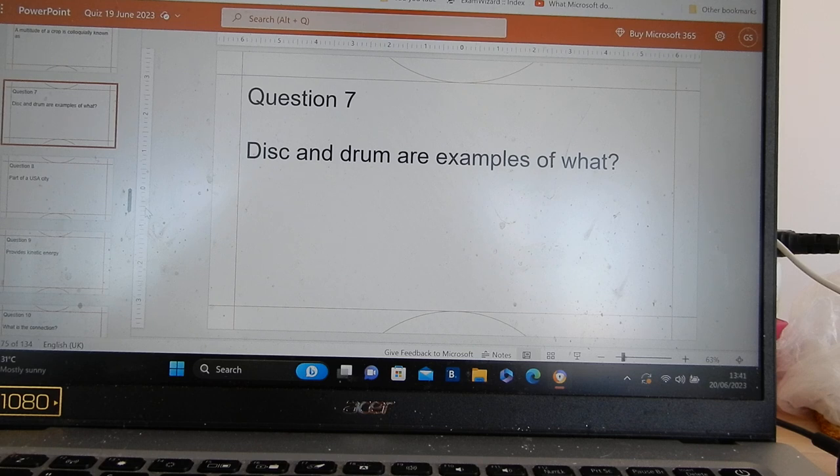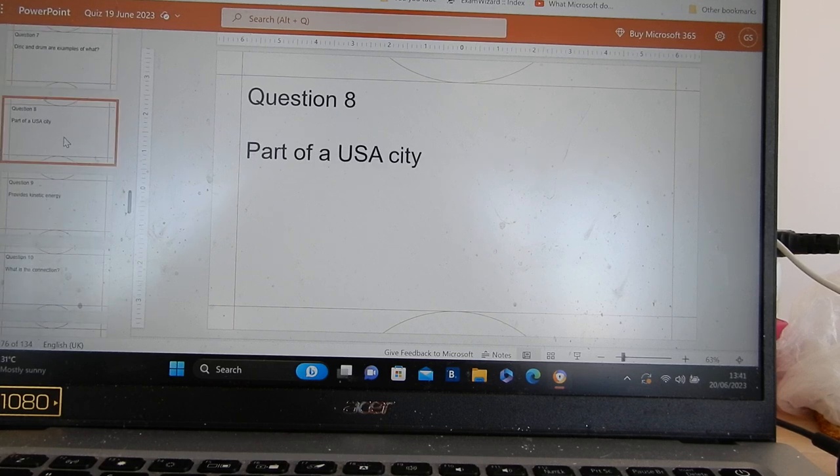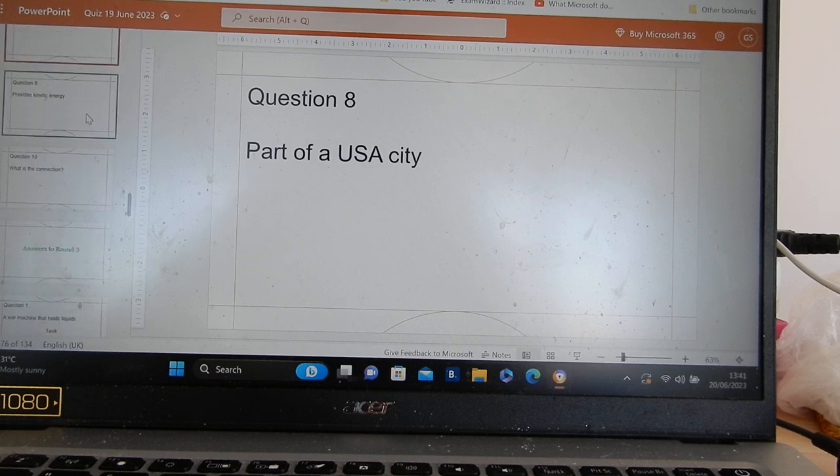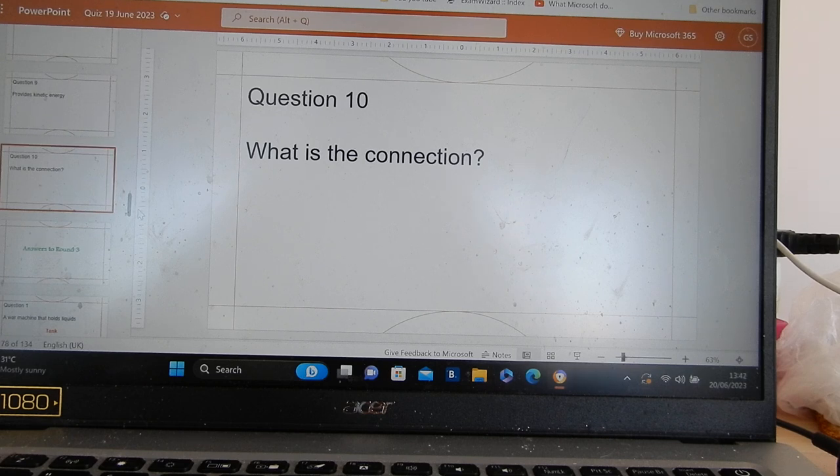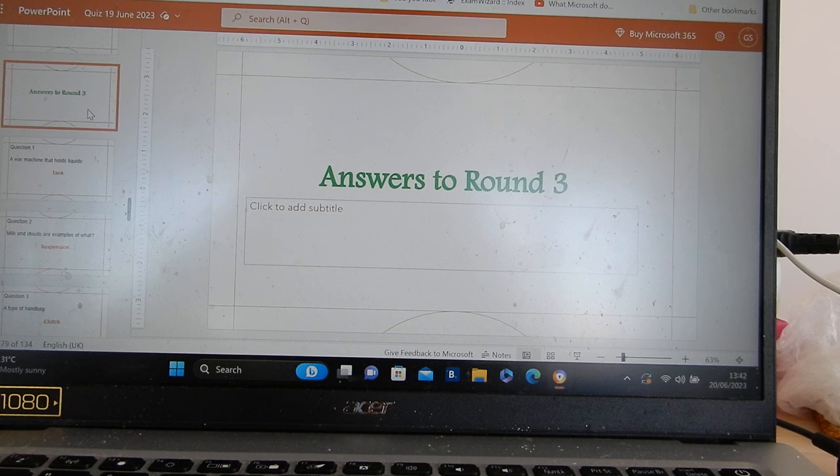Disc and drum are examples of what? Part of a USA City. Provides kinetic energy. And what is the connection? Couple of minutes to get them right here we go.